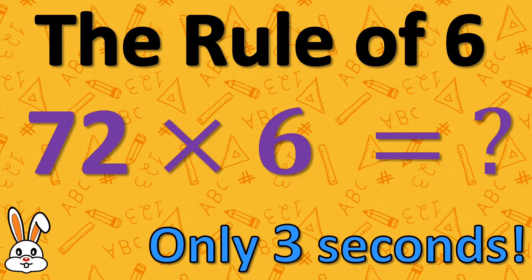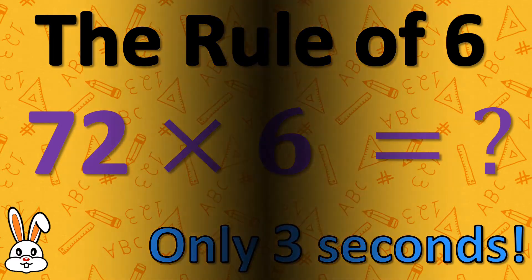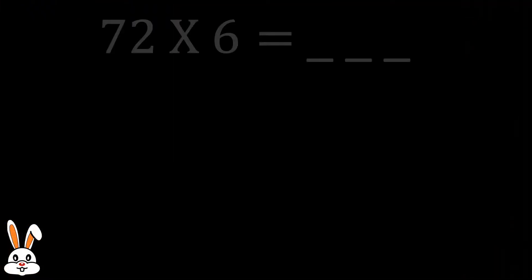The rule of 6: multiply any even number with 6 in under 3 seconds. So as usual, let's take 72 multiplied by 6 as an example.